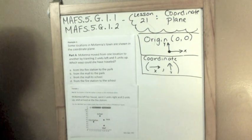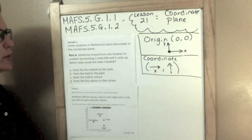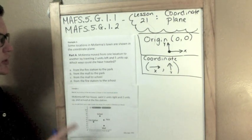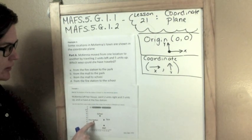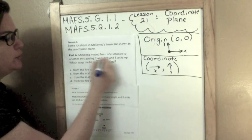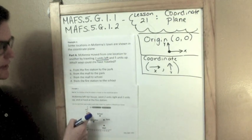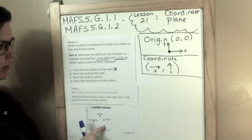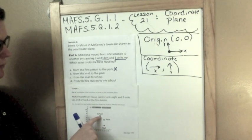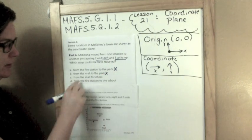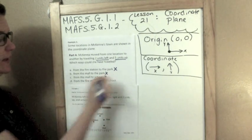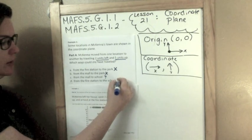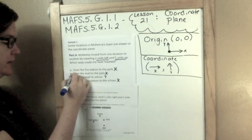Part A, McKenna moved from one location to another by traveling two units to the left and five units up. Which ways could she have traveled? So from the fire station to the park, if we were to go two units to the left, one, two, and five units up, we would not make it to the park, so that's wrong. If we were to go from the mall to the park, two units over, five units up, we'd be hitting the school, not the park. From the mall to the school, that's what we just said, that would work. From the fire station to the school, two units up and over, nope.